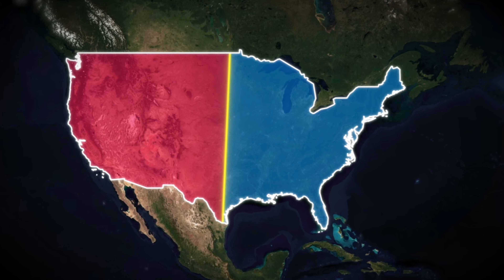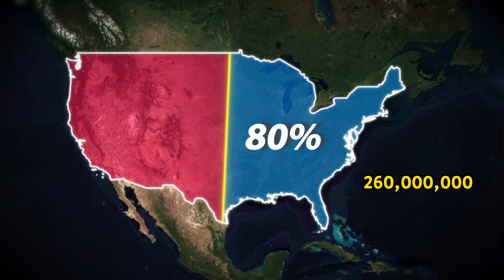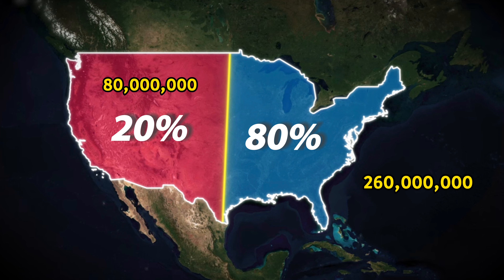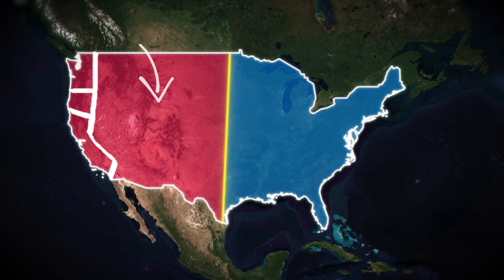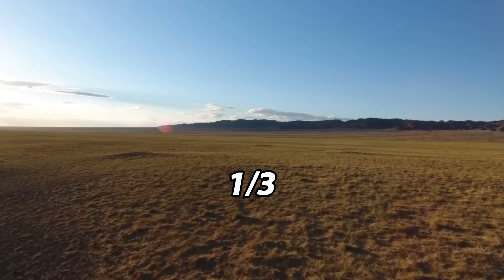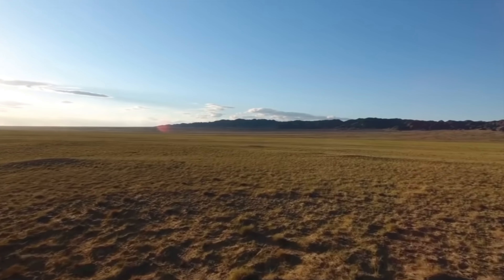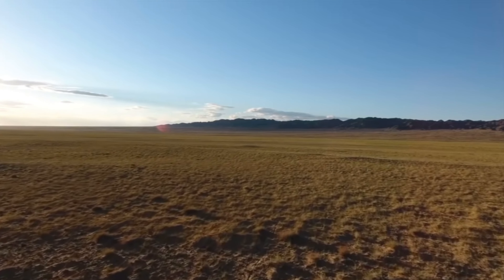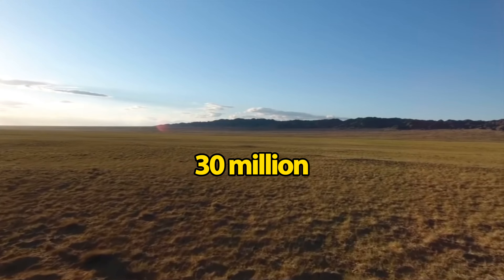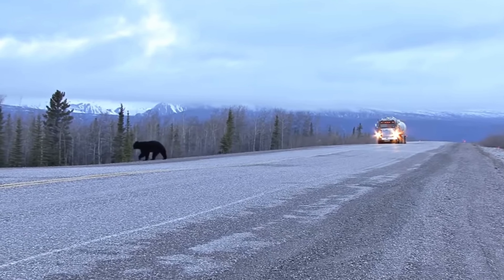The east is where 80 percent — roughly 260 million Americans — live, while the west is home to just 20 percent, or barely over 80 million people. Of that 80 million, more than 60 percent live in California alone, which has a population of over 40 million. This means the land mass west of the line, roughly one third of the US or about the size of the European Union, is home to just around 30 million people, giving it a very low population density of just seven people per square kilometer.